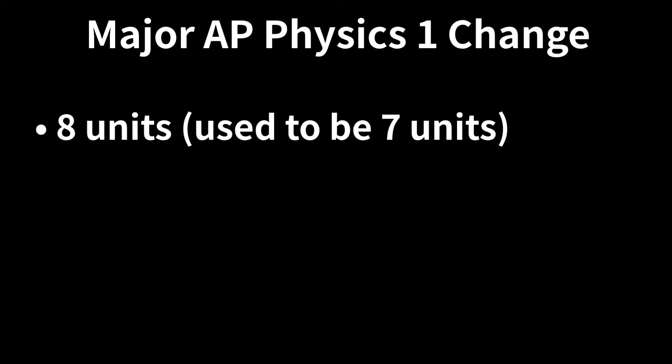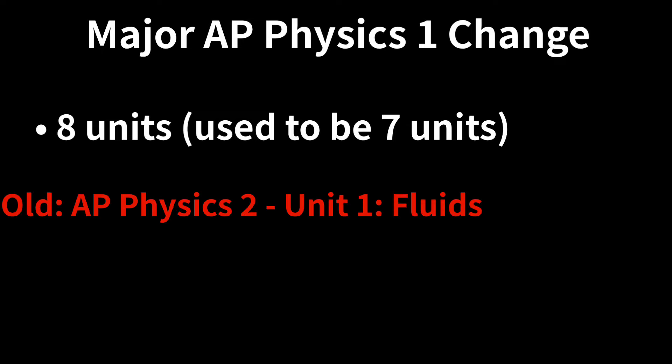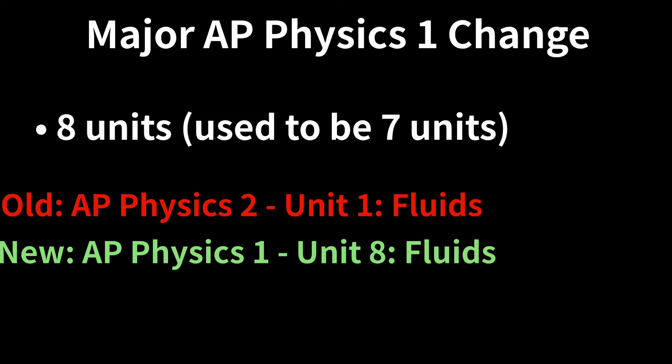Let us start with AP Physics 1 course changes. Good news for young physics enthusiasts, this course will now feature eight units and increase from seven as AP Physics 2 Unit 1 fluids will turn into AP Physics 1 Unit 8 fluids. Further, more concrete connections between translational and rotational motion will be implemented, more power references within learning objectives, and more equations for simple harmonic motion.